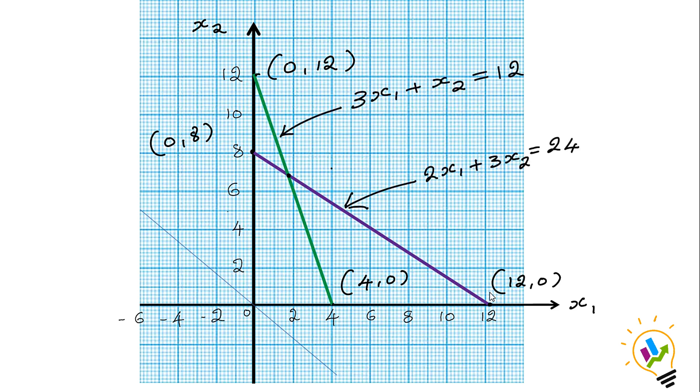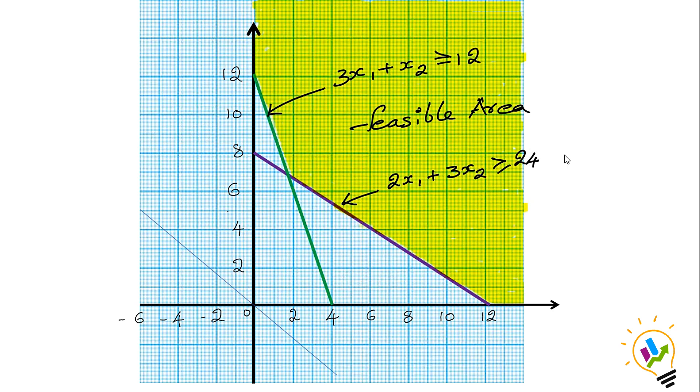These two constraint lines are 3x1 plus x2 equals 12 and 2x1 plus 3x2 equals 24. The constraints are greater than or equal to, which means we need to consider a common area which is above the lines. For the two lines, this yellow shaded area is the common area above the constraint lines, called the feasible area.